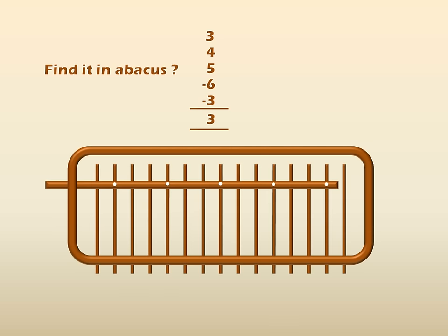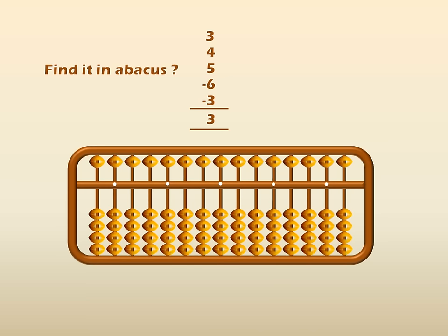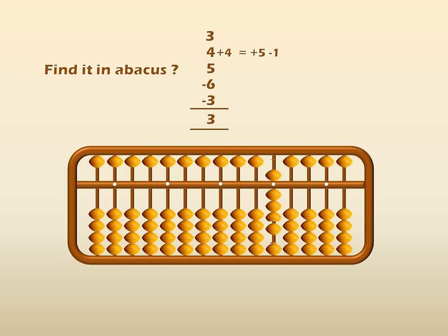This is the abacus frame. And now, take the beads. Now, take 3 first. In the 1's place, move 3 beads up in the earth beads. So, 3 beads moved up. Then, again 4 here. To get 4, add 5 and subtract 1 from the 5. Then it will become 4. So, to add 5, above the reference point, move the bead down. Then it will become 5. Now, to get 4, subtract 1 from the 5. So, to subtract, move 1 bead down. Then it will become 4.